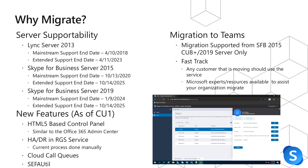Next, we need to understand why we would want to migrate to Skype for Business Server 2019. One of the big ones is server supportability. Lync Server 2013's mainstream support end date was April 10, 2018, and the extended support date is not until April 11, 2023. For organizations running Lync Server 2013, there will be no new features added to the product any longer. If you're running Skype for Business Server 2015, that mainstream support end date is not until October 13, 2020, so we're just a little bit over a year away from that mainstream support ending.